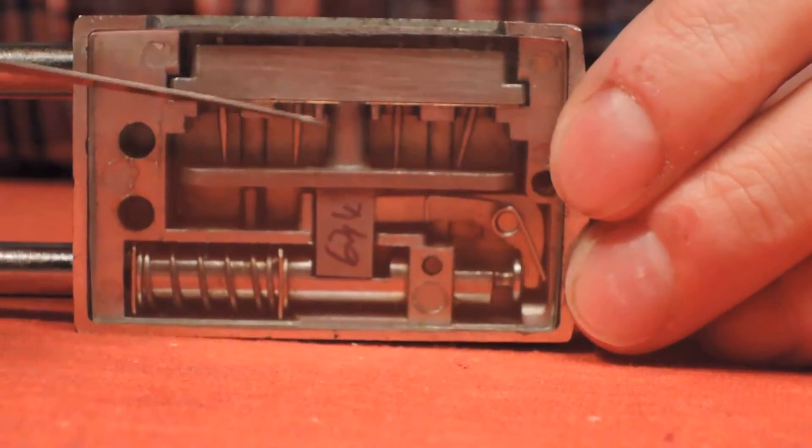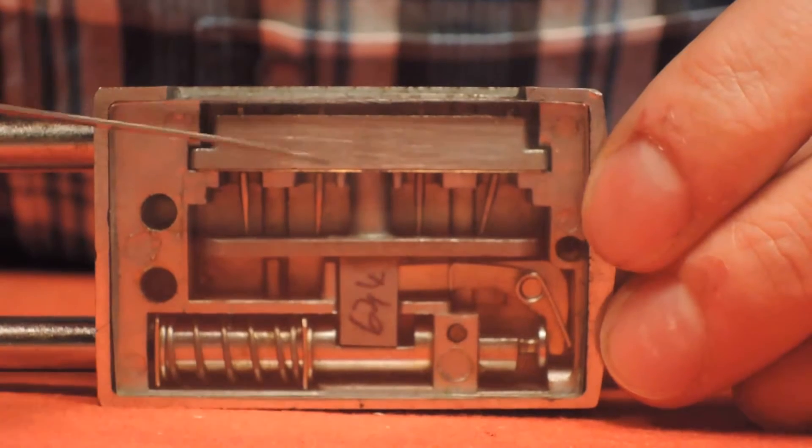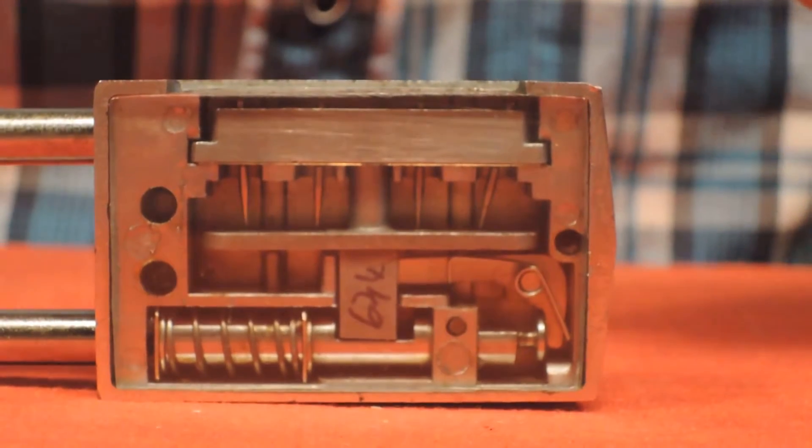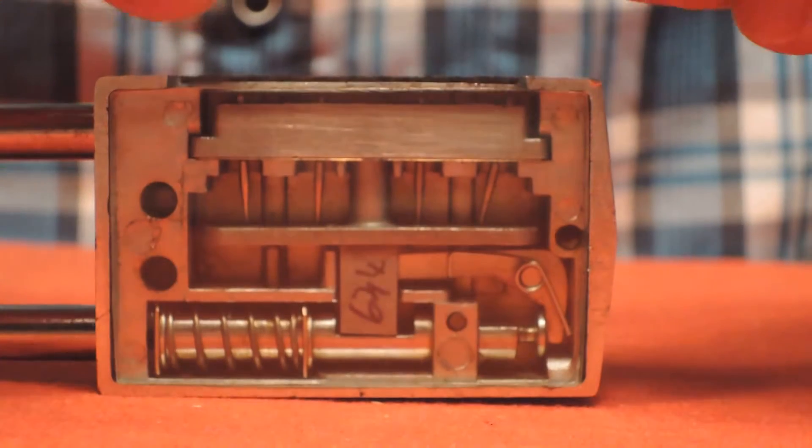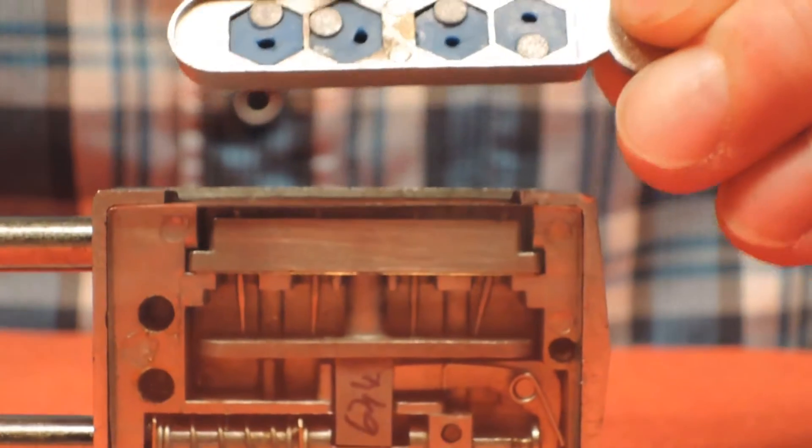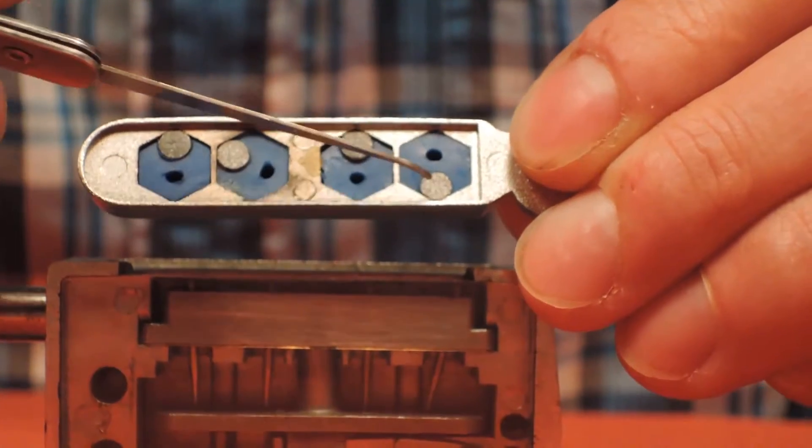We see pins, four of them. These pins can pivot. The pins are moved by the key. If we remove the top part, you can see inside of the key there are four small magnets. They can be positioned in one of six places.